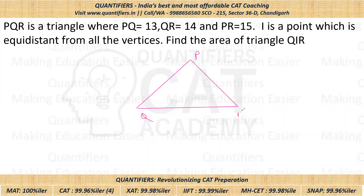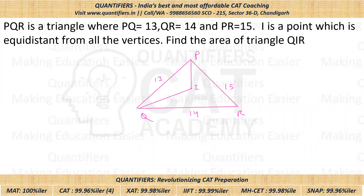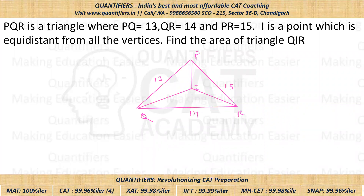Now let's come to the question. Triangle PQR is given with PQ = 13, QR = 14, and PR = 15. Point I is equidistant from all the vertices, so I is the circumcenter. We have to find the area of triangle QIR. We know one side is QR = 14, so if we can find the height, we get the answer.